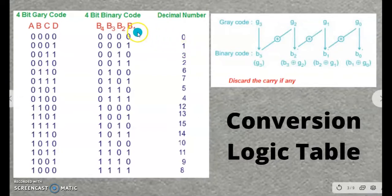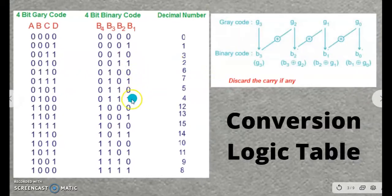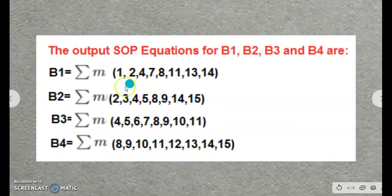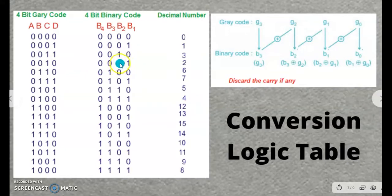The SOP equation for B1 is the summation of min terms 1, 2, 4, 7, 8, 11, 13, and 14. If you look in the table, all these positions have output 1. Similarly, we write the equation for B2, B3, and B4. For B2, the values 2, 3, and others having 1 in the output column are collected. This way we can generate the SOP equations for all four output bits.